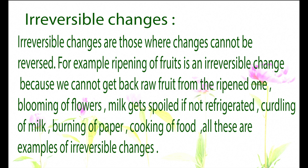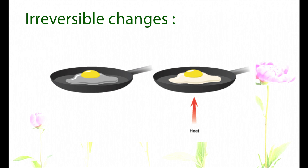Irreversible changes are those where changes cannot be reversed. For example, ripening of a fruit is an irreversible change because we cannot get back the raw fruit from the ripened one. Blooming of flowers, milk getting spoiled if not refrigerated, curdling of milk, burning of paper, and cooking of food are all examples. From an egg, when it is cooked we get an omelette, but the omelette cannot be changed back into the egg.